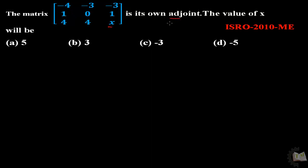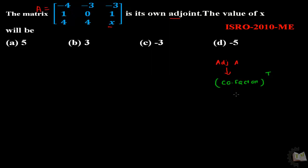First we have to calculate the adjoint of matrix A. To calculate the adjoint of a matrix, first we calculate the cofactor of the matrix and then take the transpose of the cofactor matrix to get the adjoint.